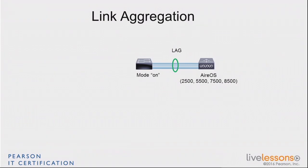In link aggregation, there are negotiation protocols: LACP and PAGP, by which the switch and the other side can negotiate which ports should be in that LAG and how communication occurs. However, the Aeros controllers do not negotiate LAGs — they just enable it or not. This means when you configure LAG on the controller, you also need to turn on LAG for the matching ports on the switch and set the LAG mode to 'on'. There is no negotiation because the controller will not respond to any negotiation. Just turn LAG on.